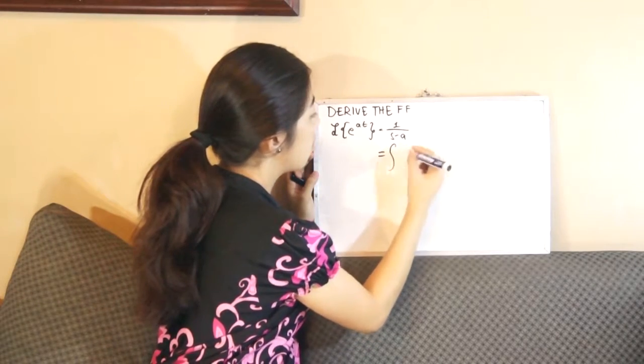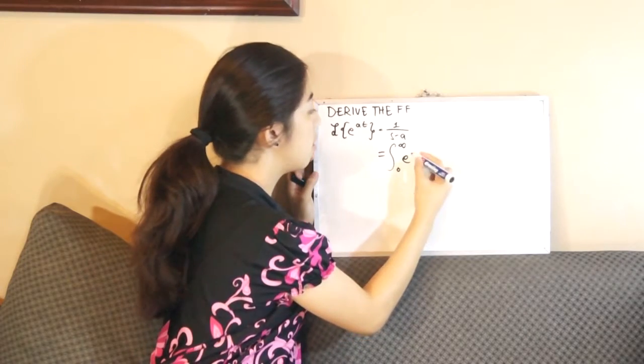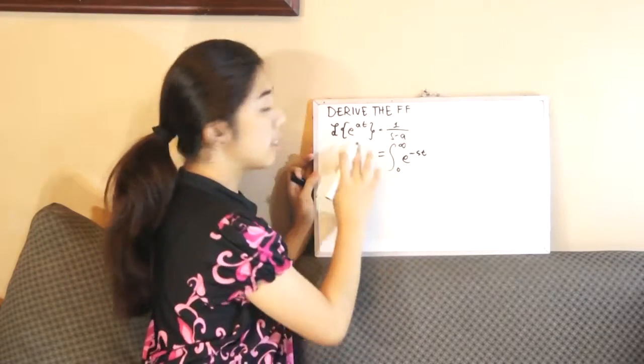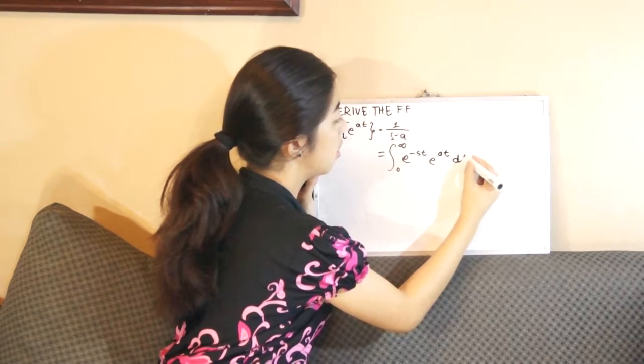In the equation, you have the integral of 0 to infinity e raised to negative st. Then insert this function e raised to at, dt.